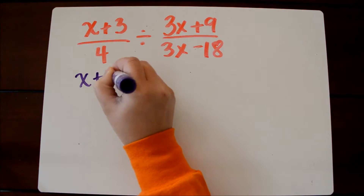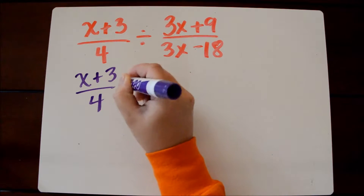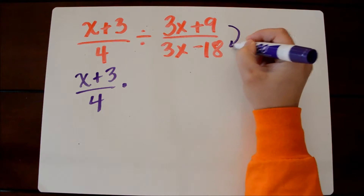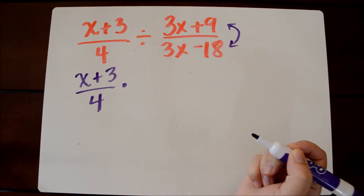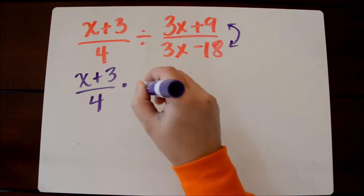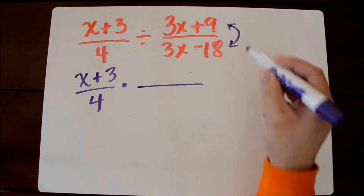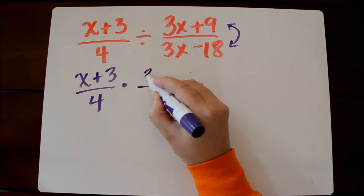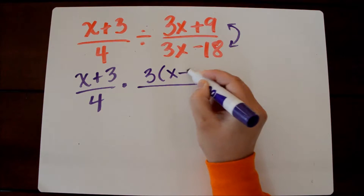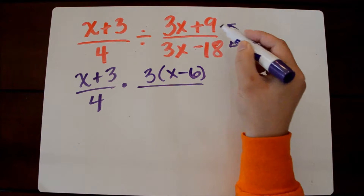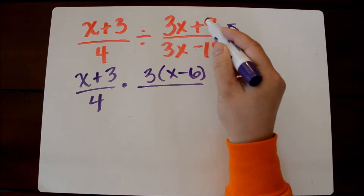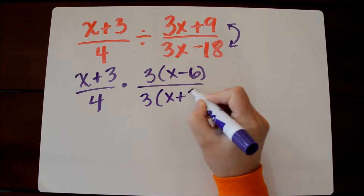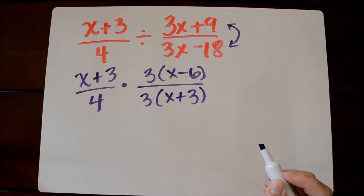I'm going to keep the first term the same, and I'm going to change this to multiplication, and then here I'm going to do two steps. I'm going to take the reciprocal, which means I'm going to flip this fraction, but I'm also going to factor at the same time. So in the numerator I could factor out 3, and we'll get 3 times x minus 6, and in the denominator I'm going to factor the numerator, and I'm going to factor out 3 and we'll get x plus 3.